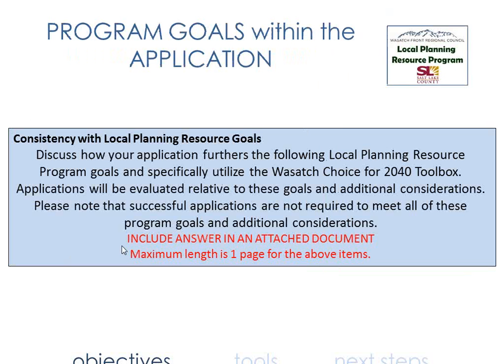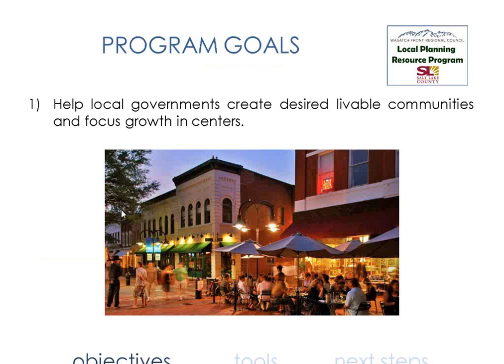One of the things you're asked to do is write a page that talks about how your application is consistent with the Local Planning Resource Program goals. Discuss how your application furthers the program goals and utilizes the Wasatch Choice for 2040 toolbox. The first goal is really implied — it's the number one reason this program exists: to help you accomplish your objective in creating a great community.